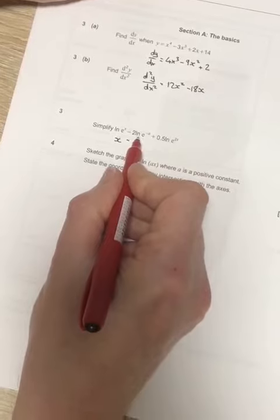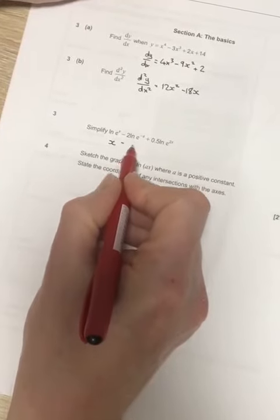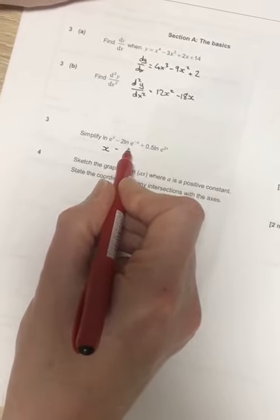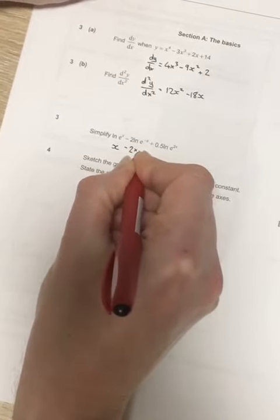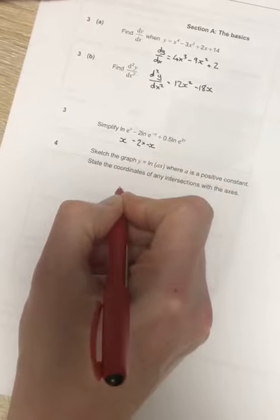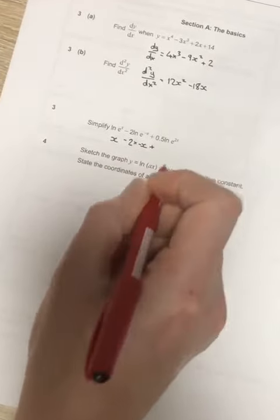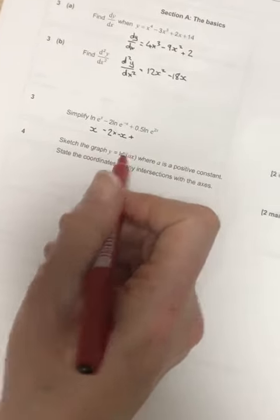Minus 2 times ln e to the minus x, what power is e raised to to make it e to the minus x? Well this can be minus x, so it's minus 2 times minus x. Plus, now at this stage it's probably easier to use the power, first of all.